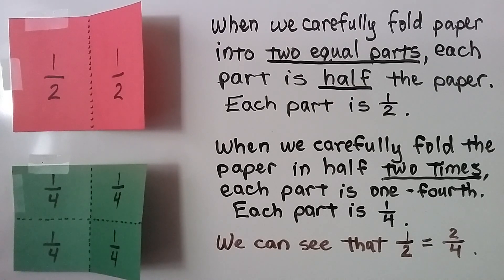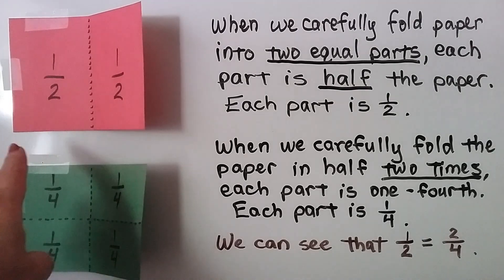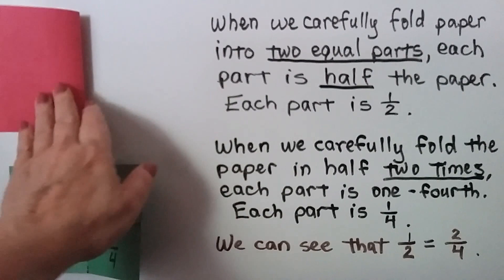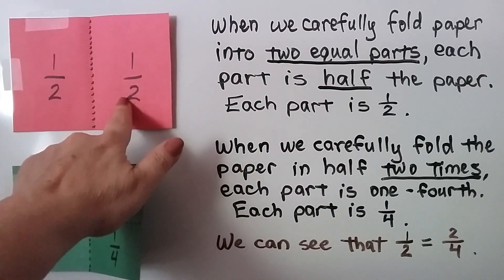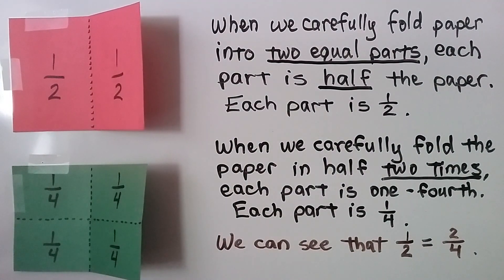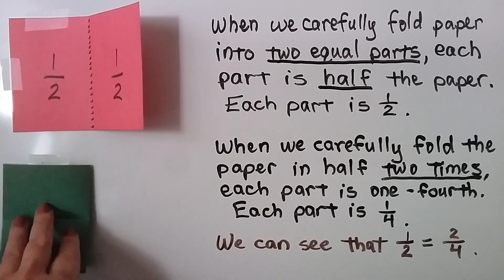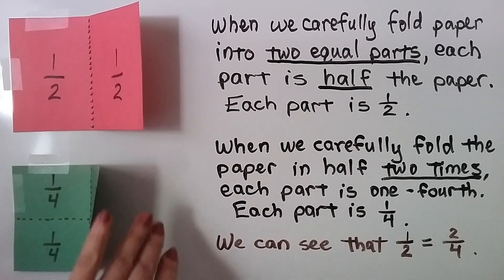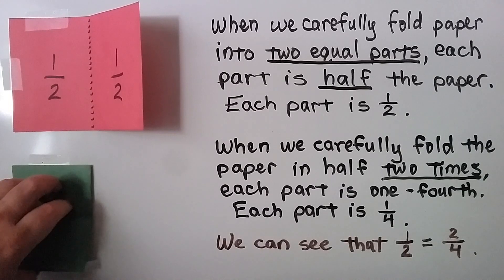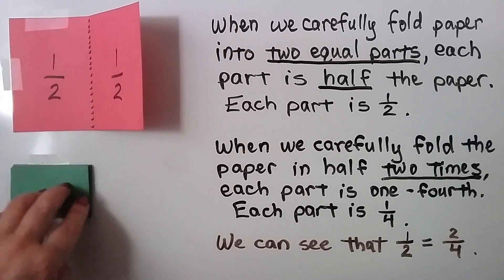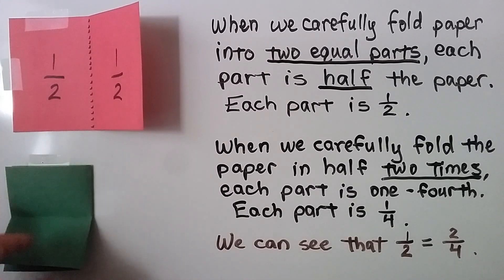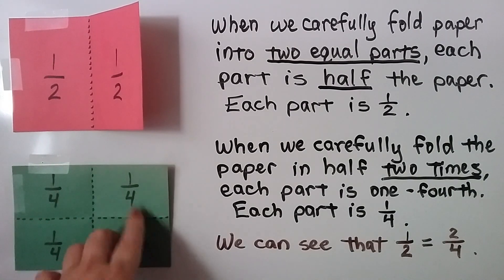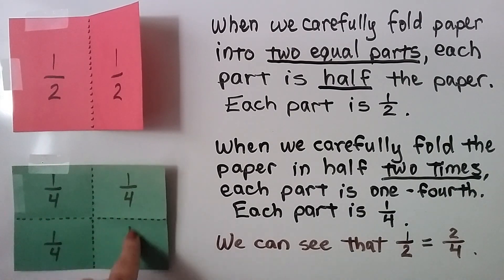When we carefully fold paper into two equal parts, each part is half the paper — each part is one half. When we carefully fold the paper in half two times — that's folding it in half one time, then folding it in half a second time — each part is one fourth.